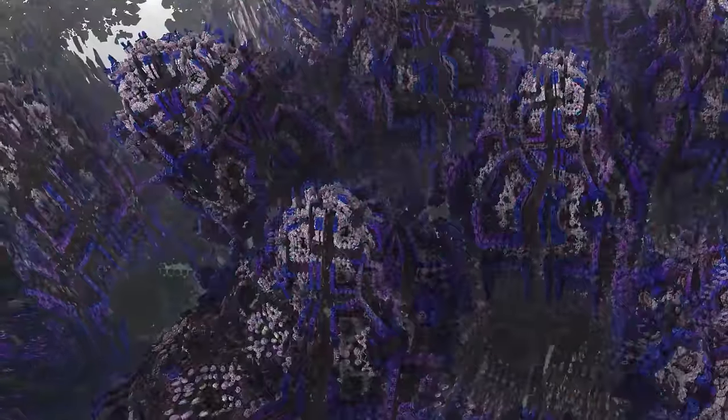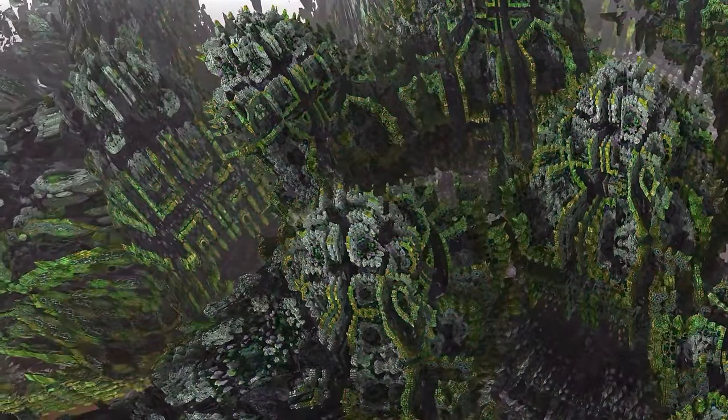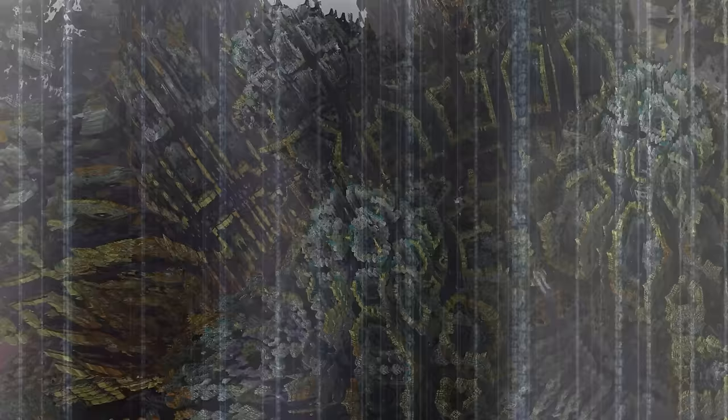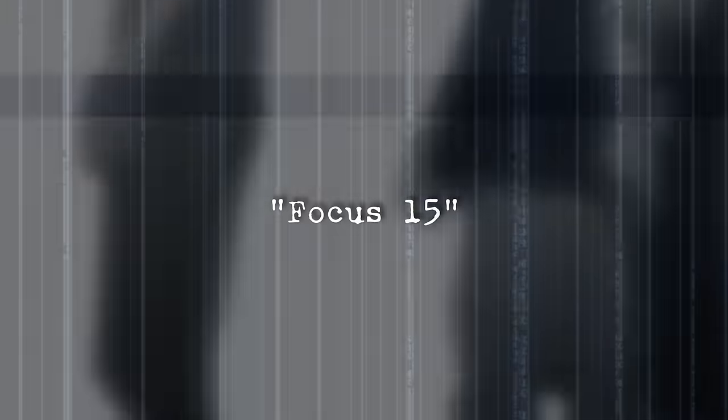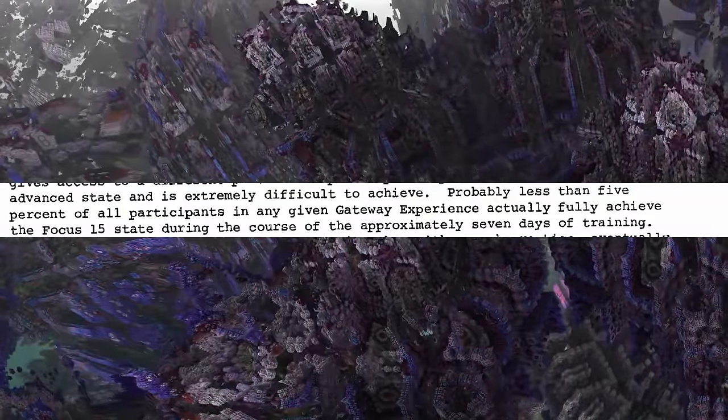Perhaps the most interesting and elusive practice within the Gateway process is traveling into the past and future. Conveniently, these two are also the most difficult things to achieve. They are also somewhat brushed over in the paper, which is a bit annoying. For time travel into the past, you need a state of consciousness called Focus 15, which is only achieved by about 5% of the participants within the 7-day time span. For traveling into the future, you need the truly advanced S-tier consciousness of Focus 21. It's kinda like the shiny Pokémon of the Gateway process.